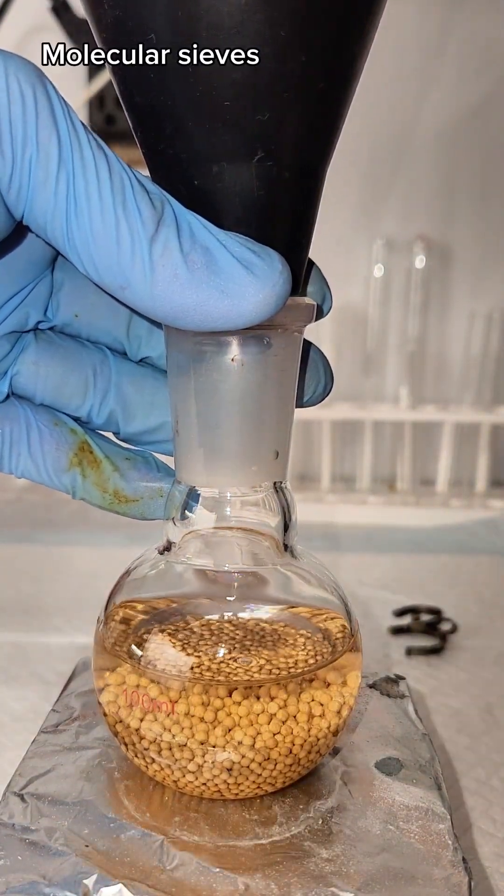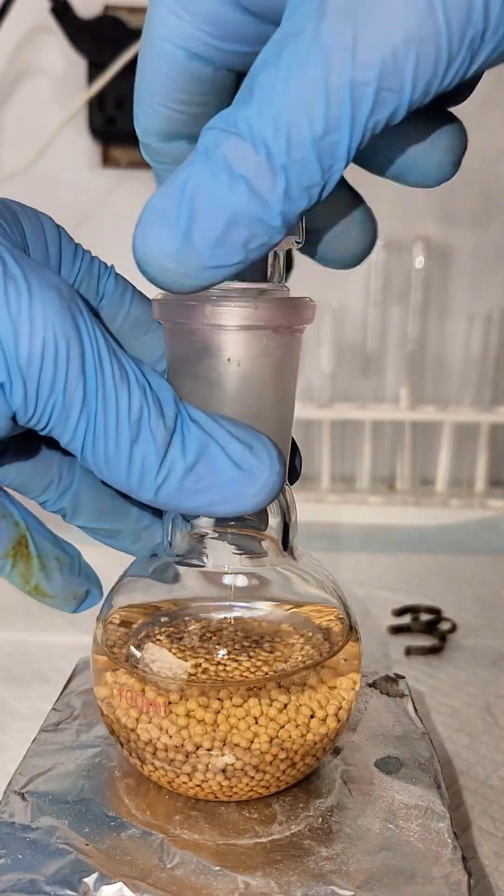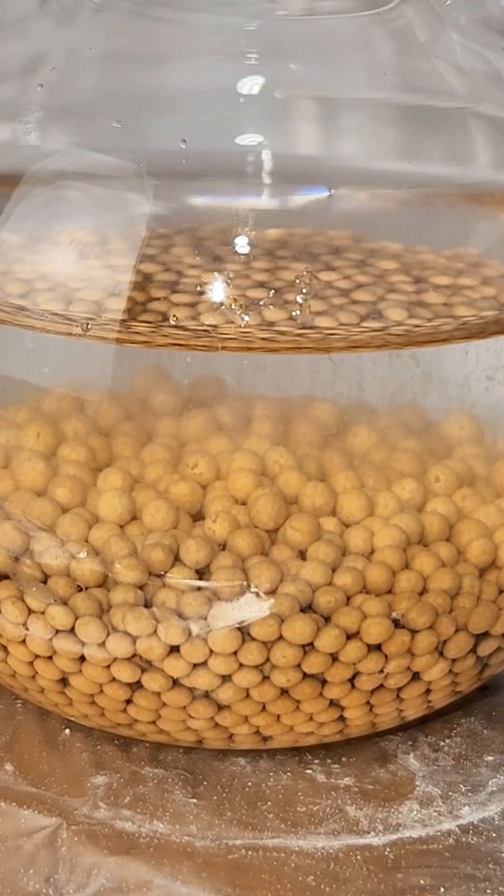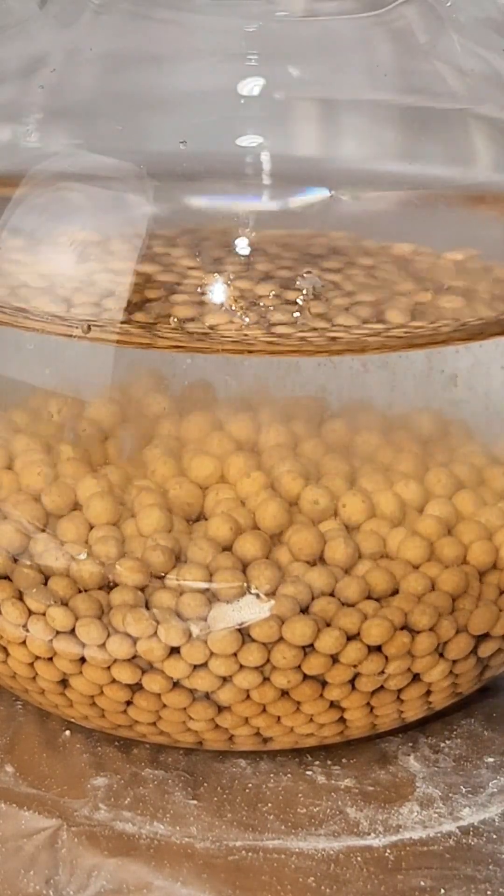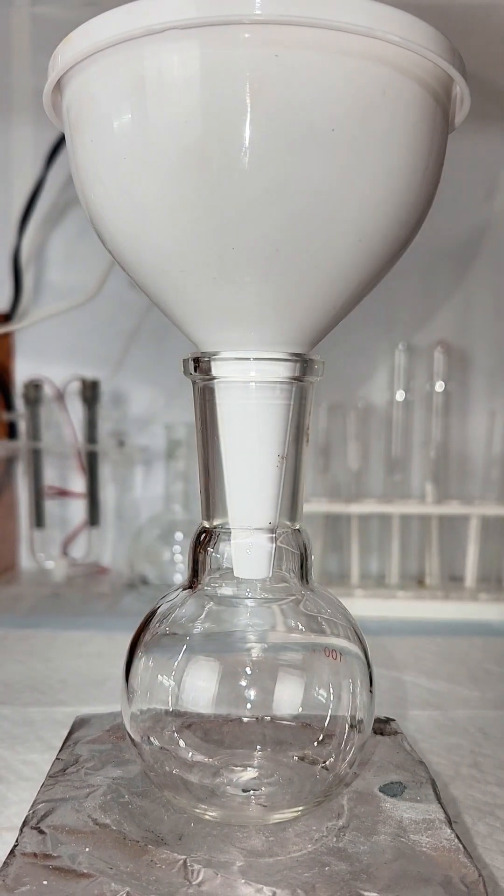Anyway, to get my ethanol to 100%, I need to use what are called molecular sieves. These are basically little dry clay pellets that will suck up the remaining 2% water and leave me with pure 100% absolute ethanol.